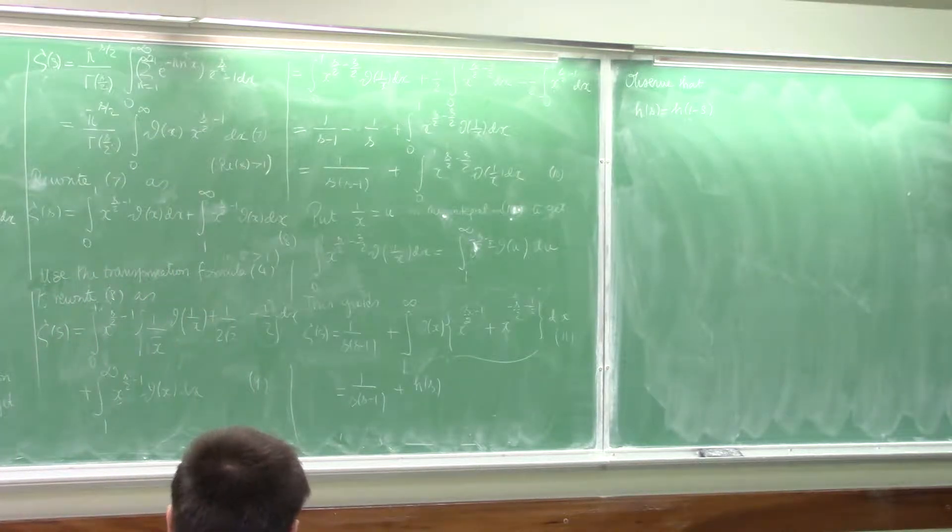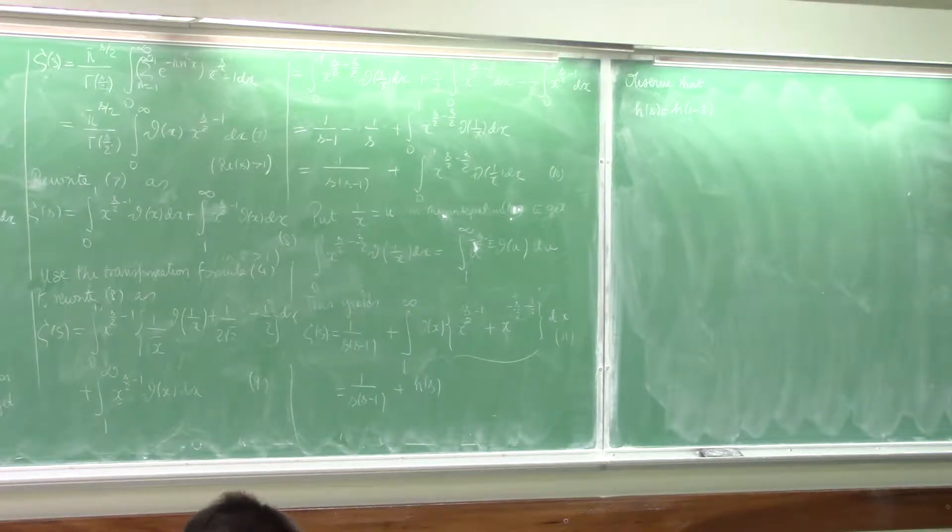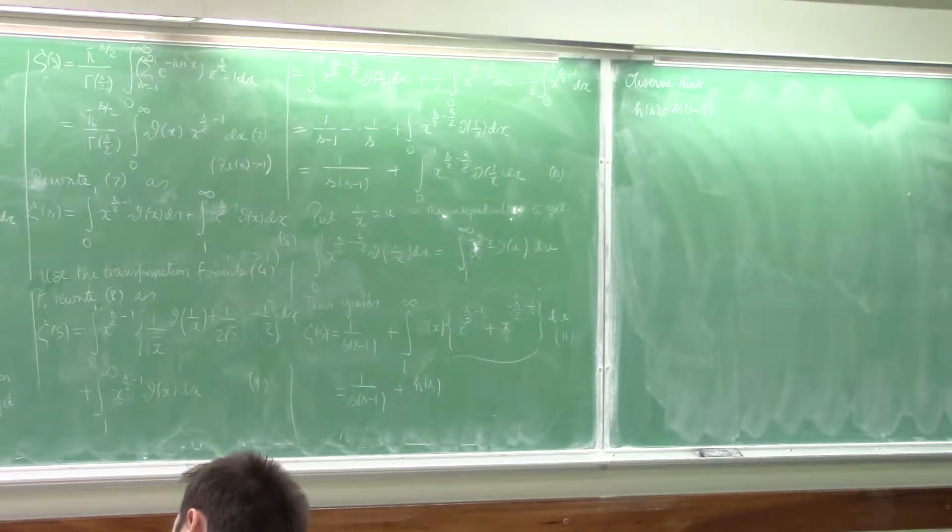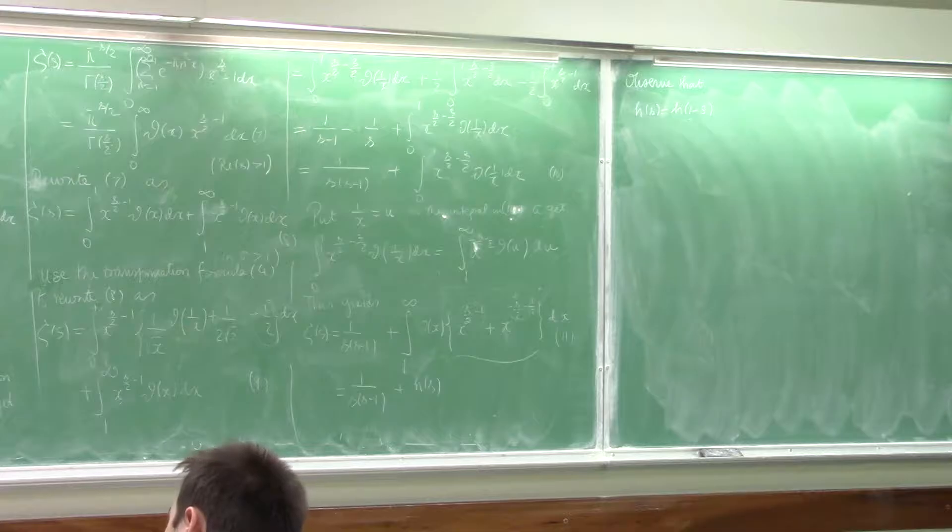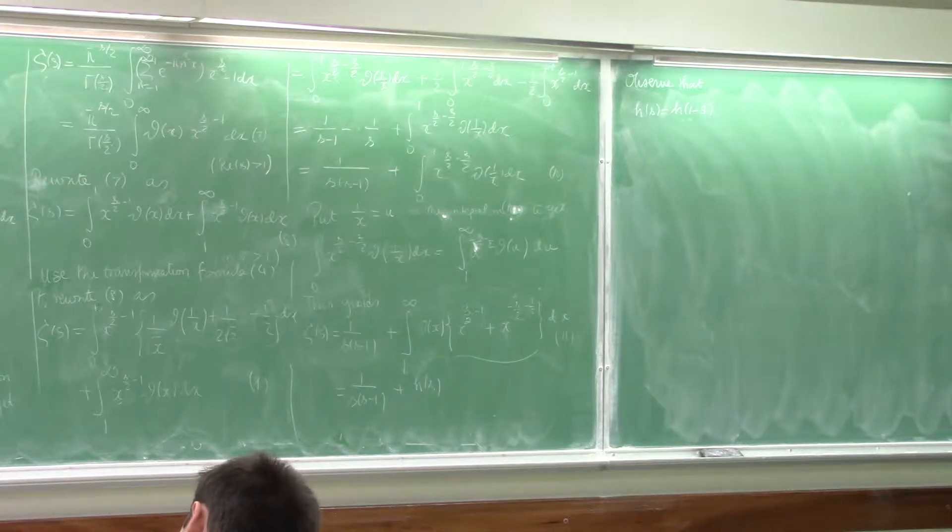As opposed to this data function. This data function, when t goes to infinity, converges to 1 because the first term is k over 0. There's a k over 0 middle term here that's always 1.